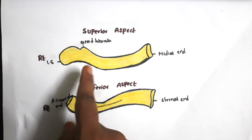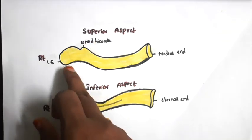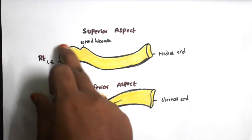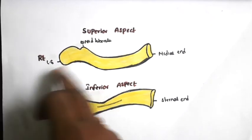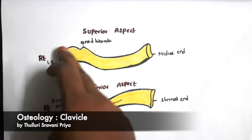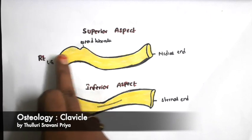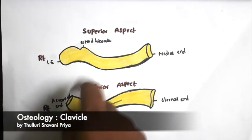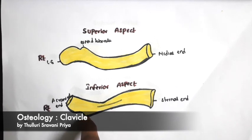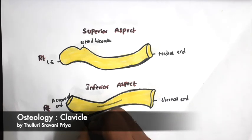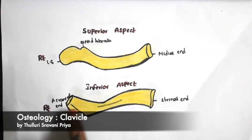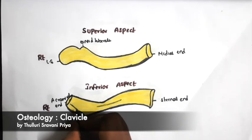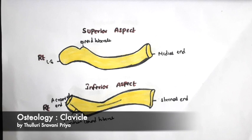Now we will see the lateral one-third of the clavicle. It consists of two borders — anterior border and posterior border — and a superior surface and inferior surface. The anterior border is concave forwards, the posterior border is convex backwards, and the superior surface is flat. On the inferior surface we will see one conoid tubercle, from which one groove extends laterally, known as the trapezoid groove. This is the trapezoid ridge, extending from the conoid tubercle towards the lateral side.